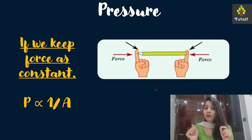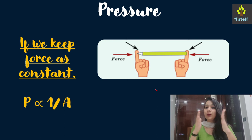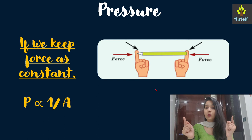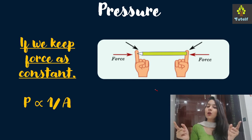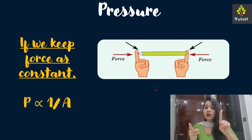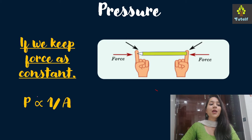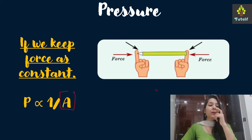For example, if you take a pen and push it from both ends, you'll get a mark from the pointed end but not the other end. This is because the area at the pointed tip is much less, so the pressure applied is more — that's why you get a prick mark there. The pressure is inversely proportional to area.